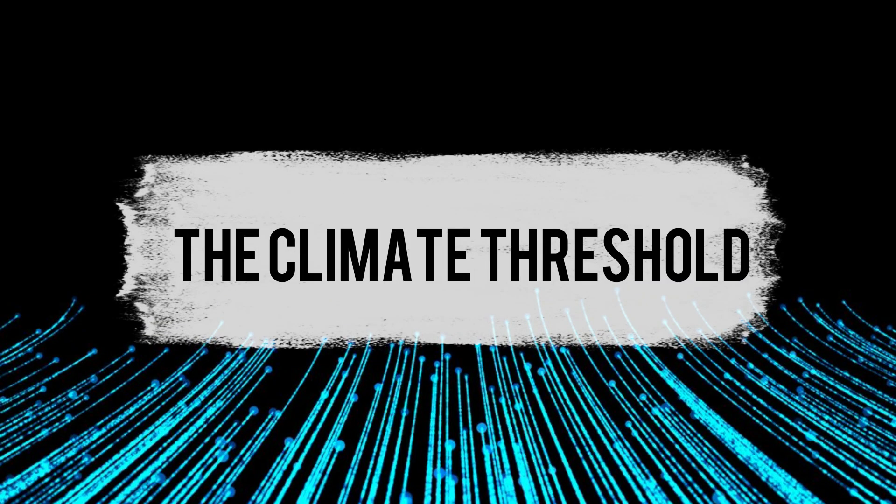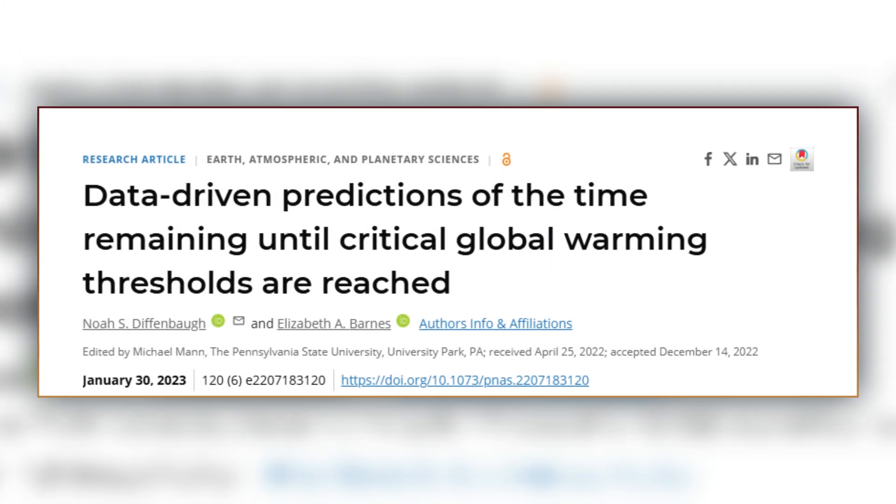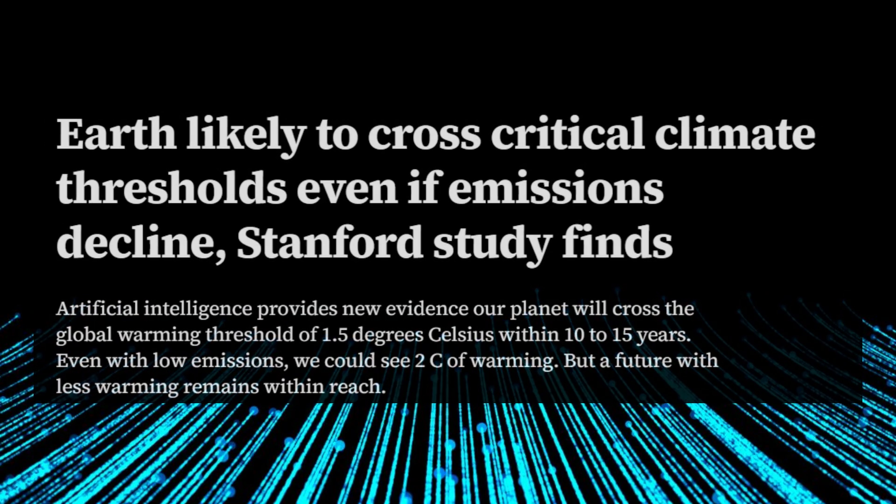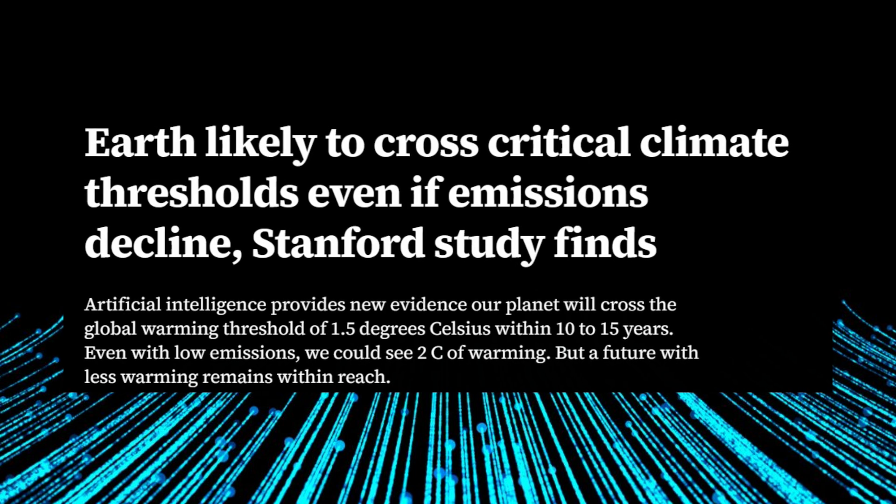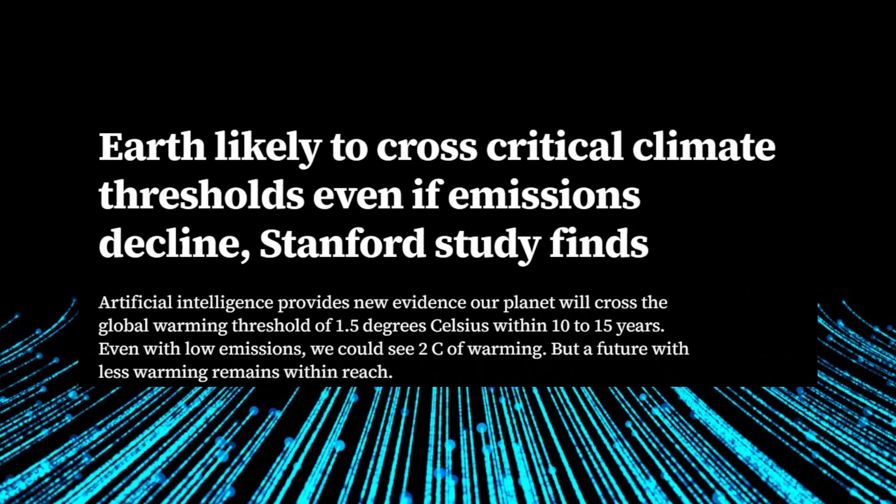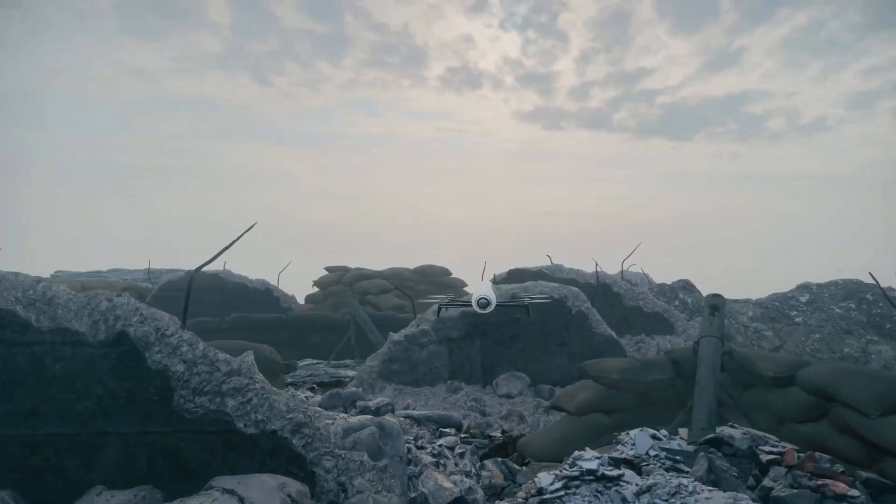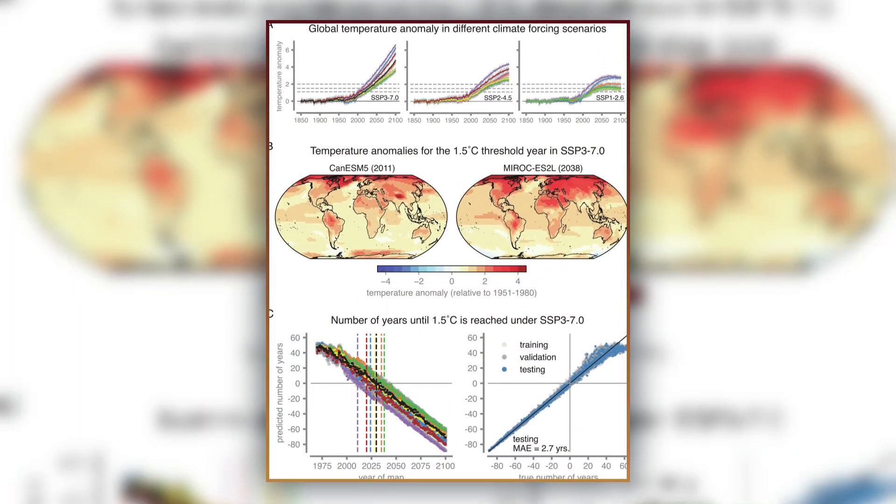Prediction number one: the climate threshold. Machine learning analysis of global climate data has revealed a stark timeline. We'll breach the 1.5 degree Celsius warming threshold between 2033 and 2035, even with significant emission cuts. AI systems processing satellite data and atmospheric measurements show this isn't just probable, it's now virtually certain.